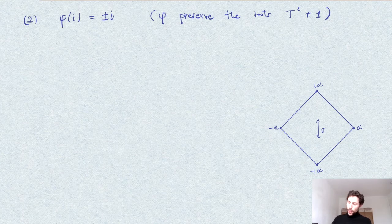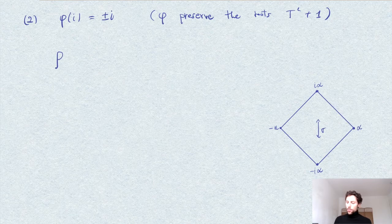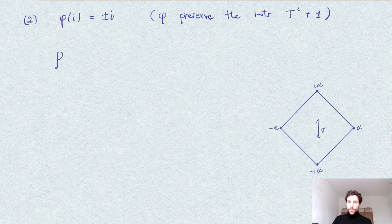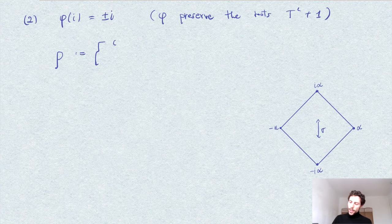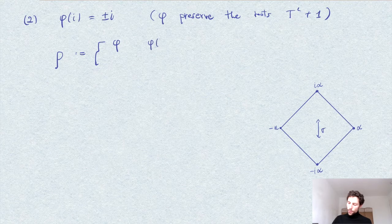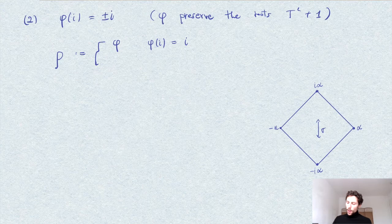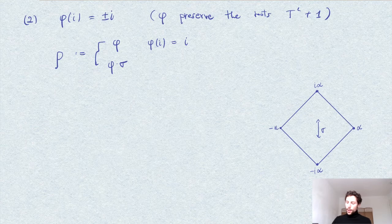In any case, we can define an automorphism rho, which we define as follows. We just take phi if in the case phi of i is equal to i, and we take the composition of phi and the complex conjugation in the other case.